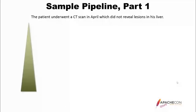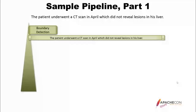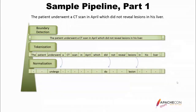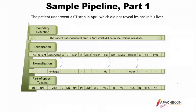So we have boundary detection — basically right now it's saying that this is all within a sentence, perhaps with some other boundaries like a section. Tokenization separates all the words, and you can see at the end that the period is actually a token of its own. Normalization: some words have a normalized form — 'underwent' is 'undergo,' 'did' is 'do,' etc. And part of speech tagging will indicate what part of speech each token belongs to.